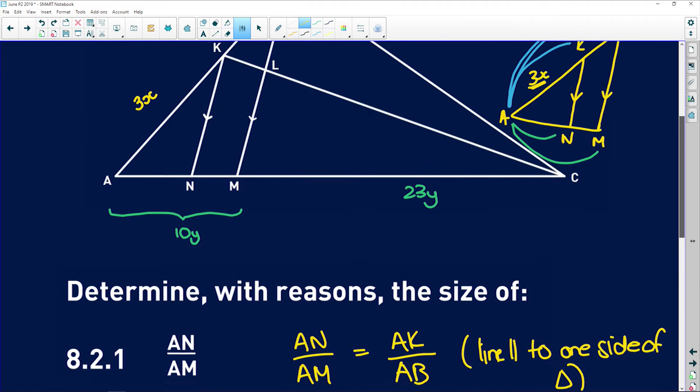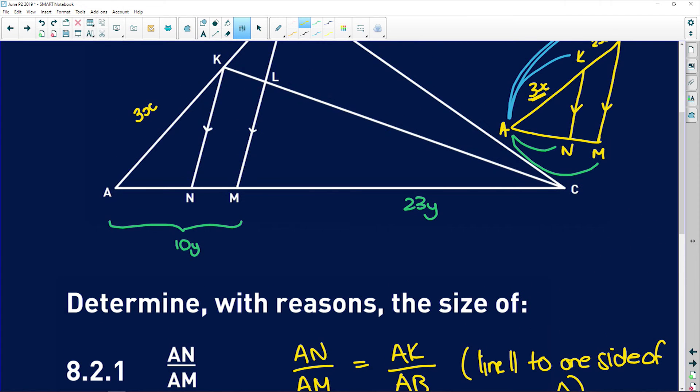So that is saying here, AN to AM is 3 to 5. Just remember, that's not the actual length, that's the ratio.